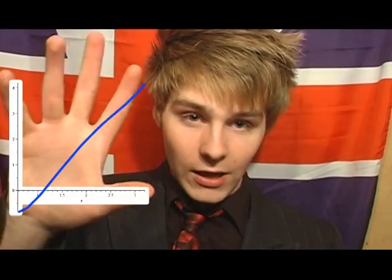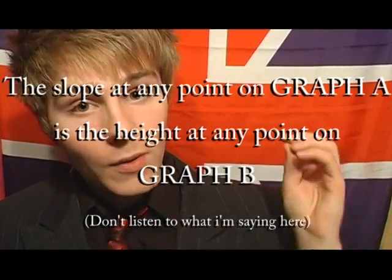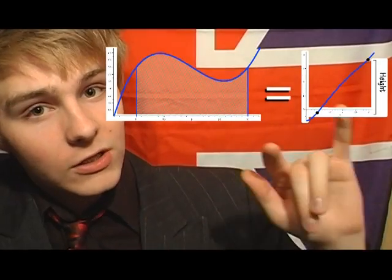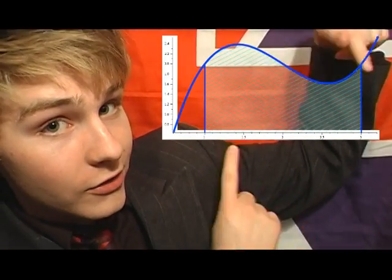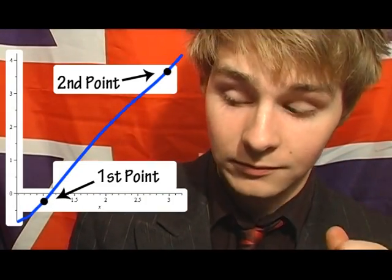This is when it gets magical. So we have graph A and we have graph B. Graph B is the derivative of graph A — that is to say, at any given point on graph A, you can find the slope by looking at the height of graph B. Something often more interesting to engineers and mathematicians is the opposite: the slope at any given point on graph B is the height of graph A, meaning graph A is the integrated function of graph B. Now, the part of the fundamental theorem of calculus I'm going to prove says the area underneath the graph on a given interval is equivalent to the difference in height on the integrated graph. For example, the area underneath this portion of the graph equals the height of the second point of the interval minus the height of the first point on the integrated graph.